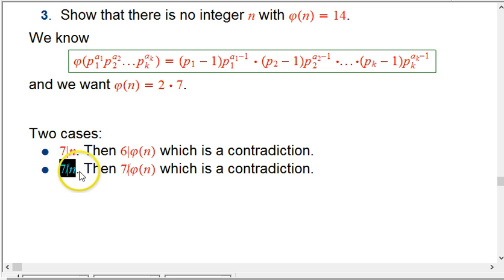So now we're going to look at the case where 7 doesn't divide n. If we can show that that leads to a contradiction, then we're totally done. Because we've figured out the only two cases. Either 7 divides n or it doesn't. And if they both lead to a contradiction, then we can say this is actually impossible.